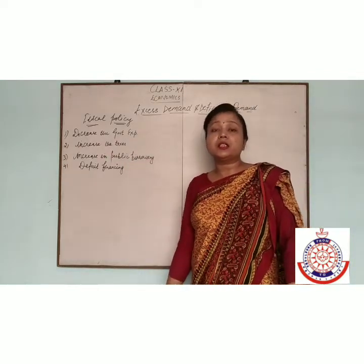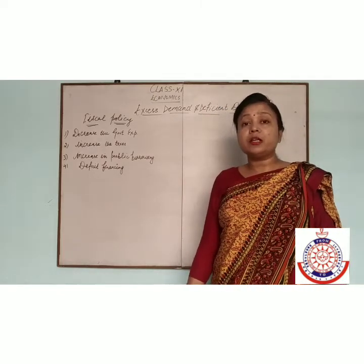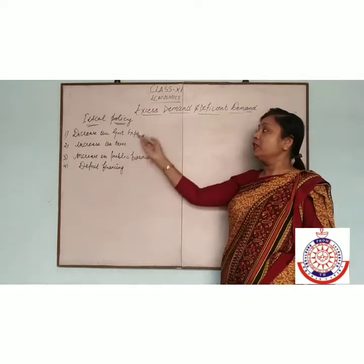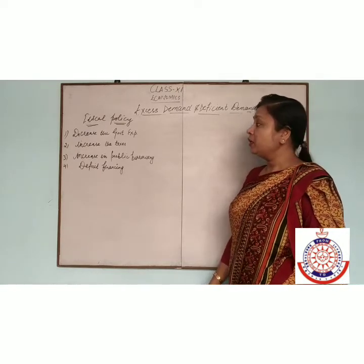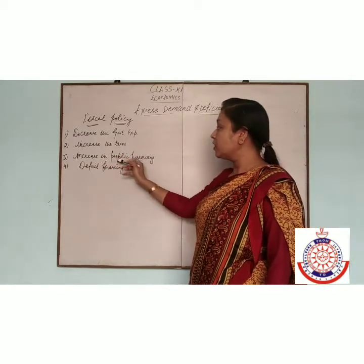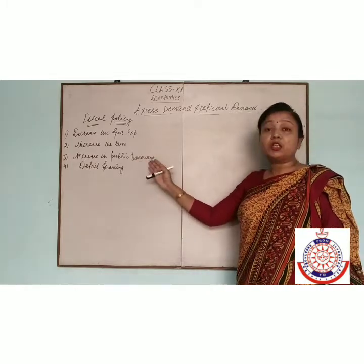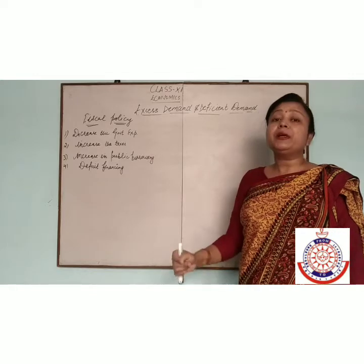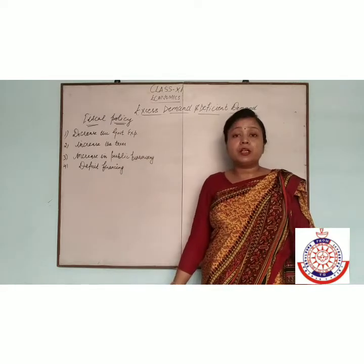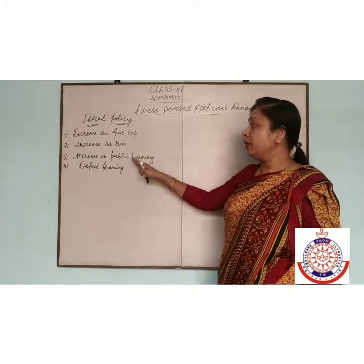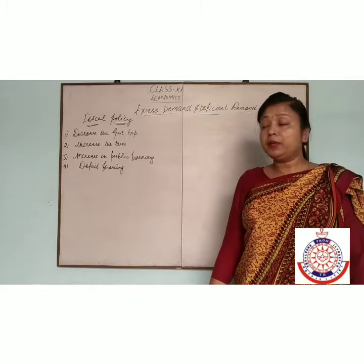In case of excess demand, the government increases the taxes. If government increases the taxes, then disposable income will be less. And if disposable income is less, people will demand fewer goods and services. Then the problem of excess demand will be removed. Third is increase in public borrowing, which means the government takes loans from the public. If government takes more borrowing from the public, then public disposable income will be less, and the public will buy fewer commodities, so the excess demand problem will be removed.